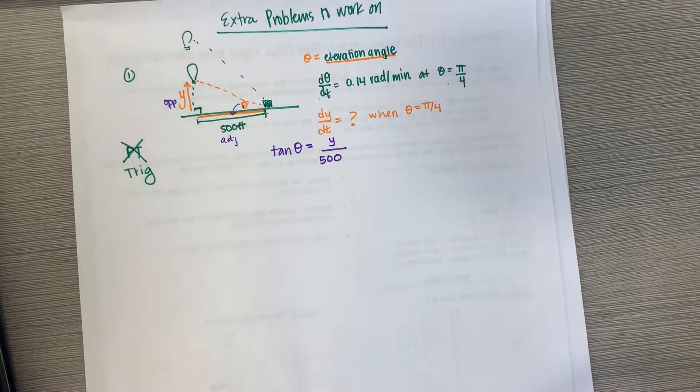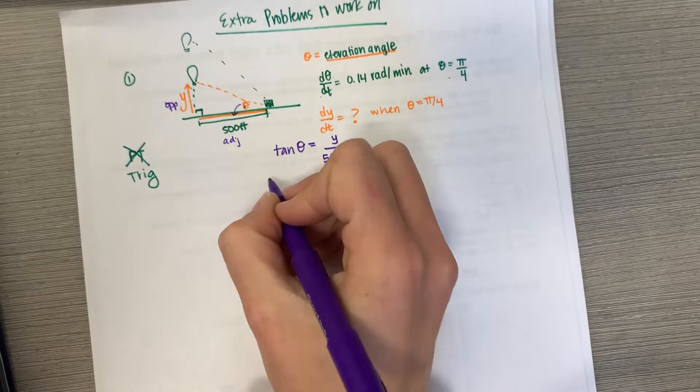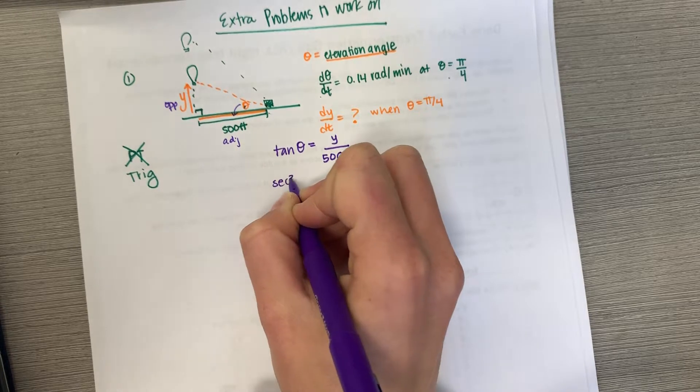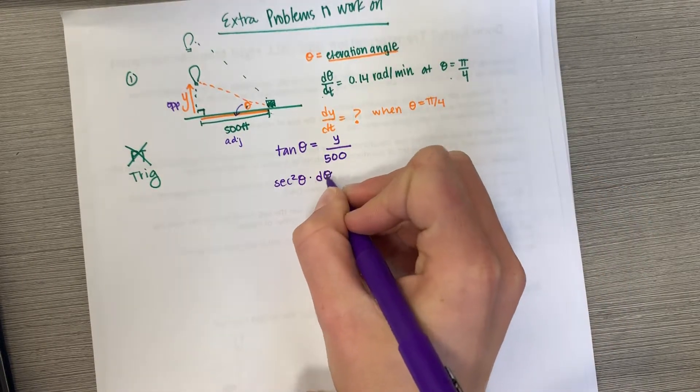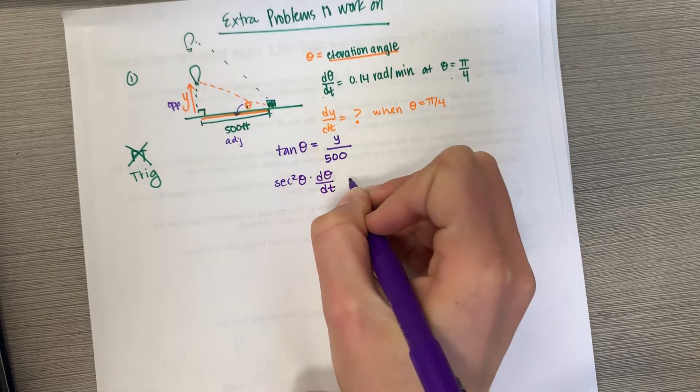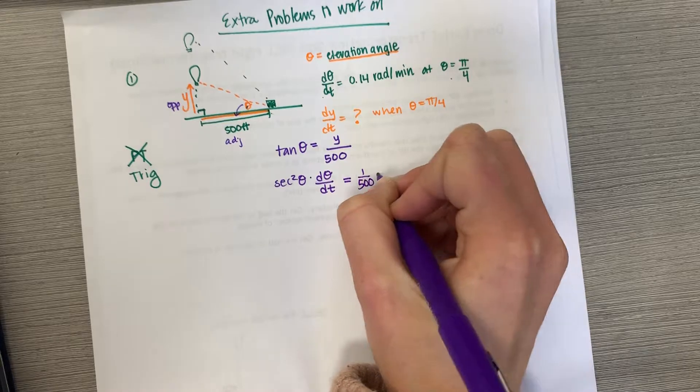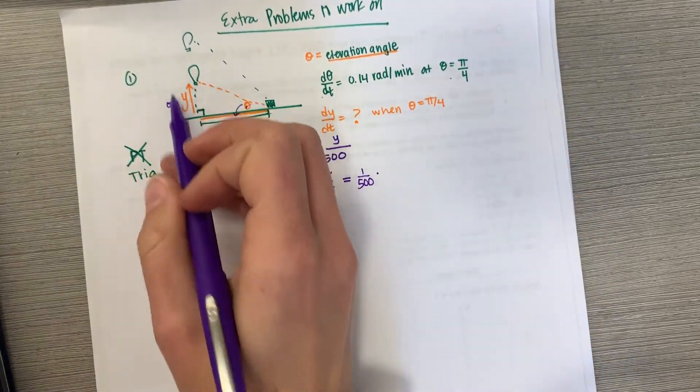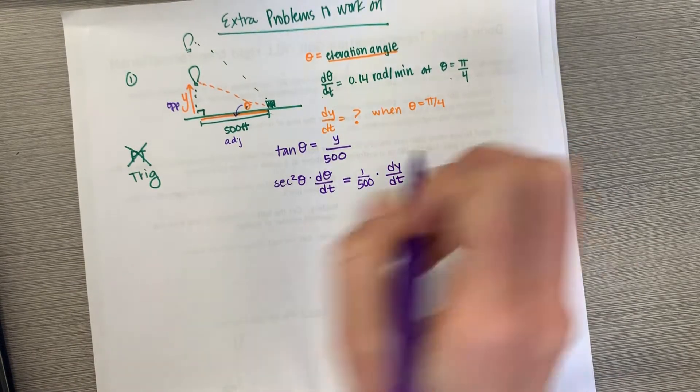From there we can implicitly differentiate. What's the derivative of tangent? Secant squared theta, but theta is changing when time is changing so d theta dt is equal to 1 over 500, that's our constant multiple, times the derivative of y, our vertical distance that's changing with respect to time.